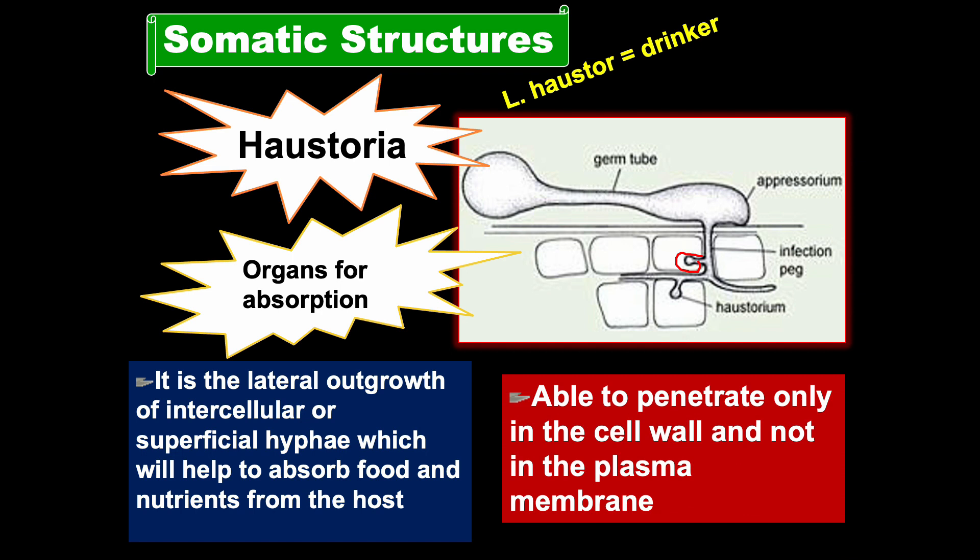Sometimes the hypopodia produce haustoria, as in the ectophytic fungus Meliola aceris growing on leaves of green plants. Almost all haustoria are able to penetrate only into the cell wall but not through the plasma membrane.